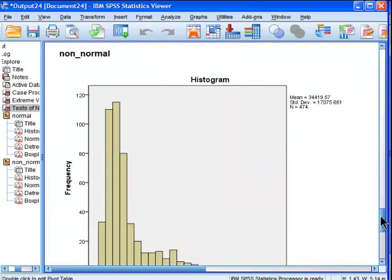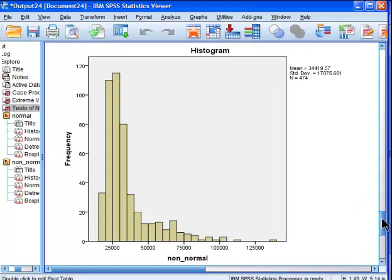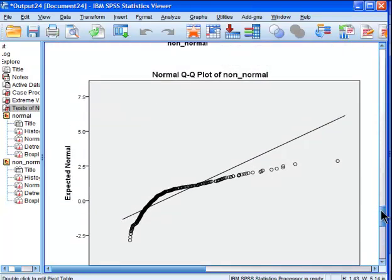Now let's look at the variable that I believe to be non-normally distributed. This is what it looks like in a histogram. It's pretty obvious it's not normally distributed. It's got a positive skew because the tail is pushing out on the right side of the chart. Now if we look at the normal Q-Q plot, we can see it's